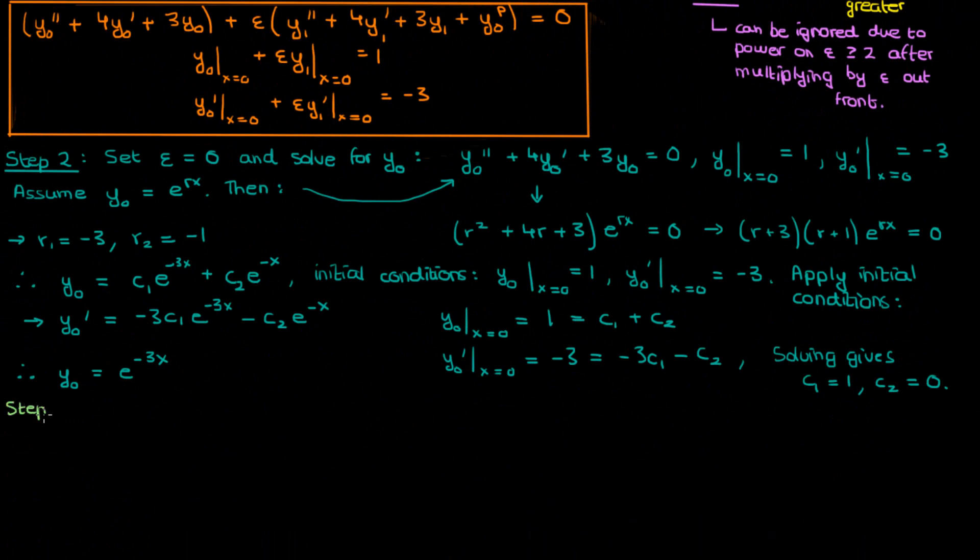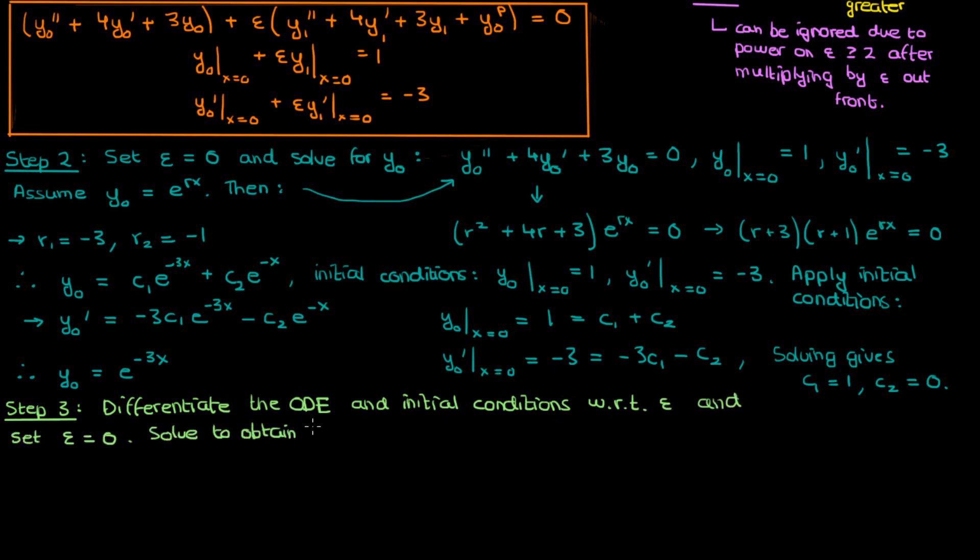So we've done step 2, let's now move on to step 3. Here we have to differentiate the ODE and initial conditions in this box with respect to epsilon. Set epsilon equal to 0 and then solve to find our y1. When we perform the differentiation with respect to epsilon, everything that's out here in the parentheses of y0 goes away because those terms aren't multiplying epsilon. In addition, the initial conditions for y1, which are remaining after we differentiate away the epsilon, are just 0. Now we know from step 2 that y0 is e to the negative 3x, so that means that y0 to the p is just e to the negative 3px. As a result, we can move this y0 to the p term in our differential equation to the right and end up with this non-homogeneous ODE.